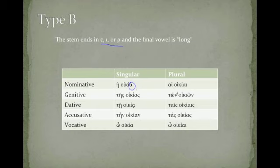And in the plural, hai oikiai, tōn oikiōn, tais oikiais, tas oikias. Again, plural first declension nouns are always the same.